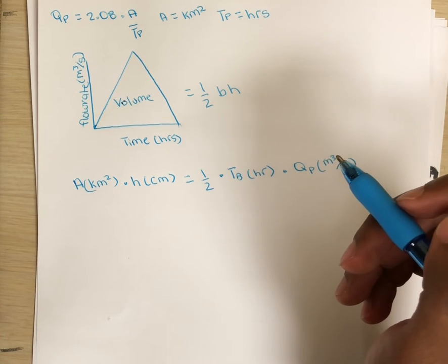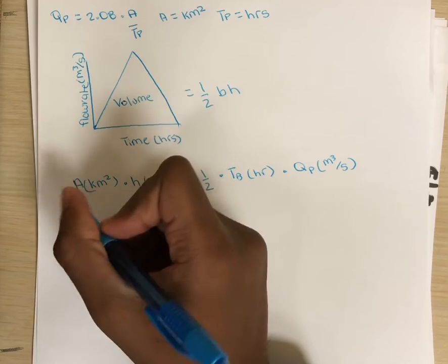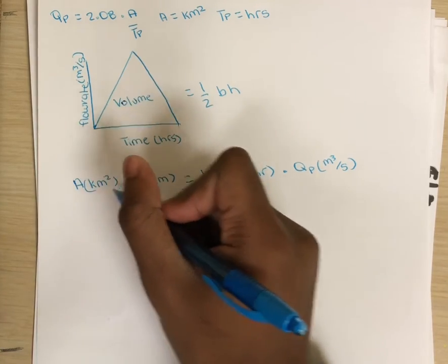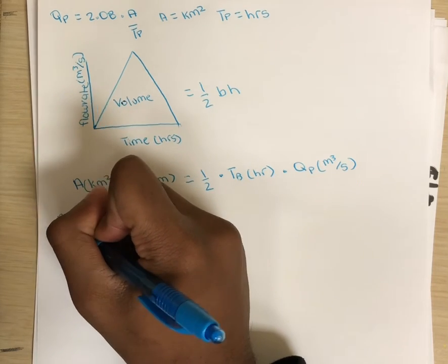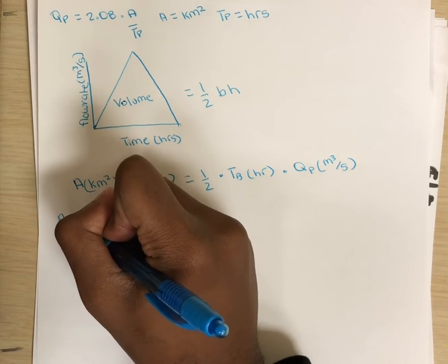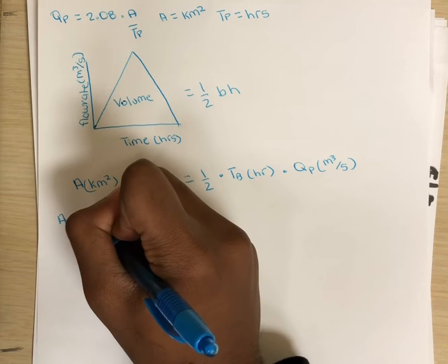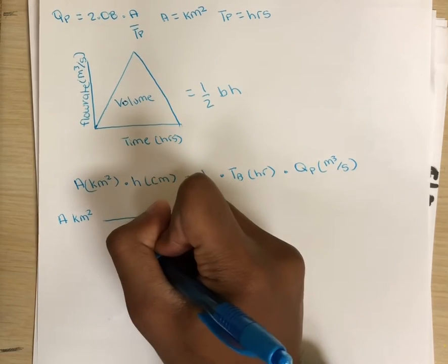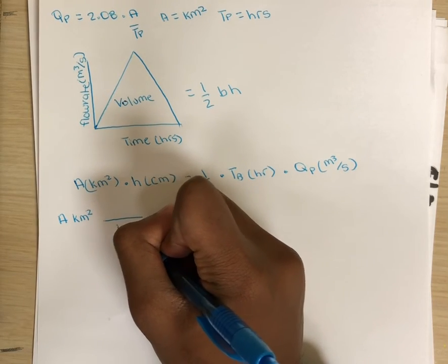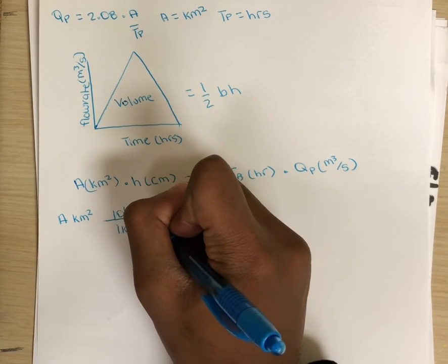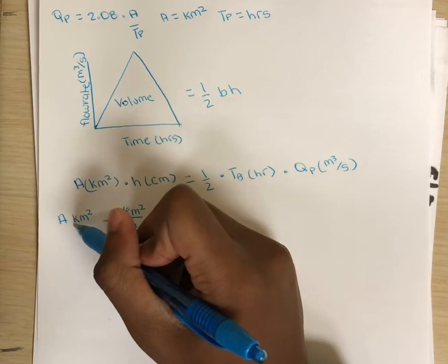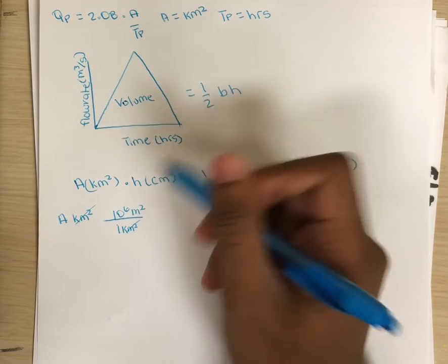So using conversion, let's start with area and convert kilometers squared to meters squared. We begin this by starting with the kilometers squared and knowing that in one kilometer squared, there is 10 to the sixth meters squared. The kilometers squared cancel each other out, just leaving meters squared.